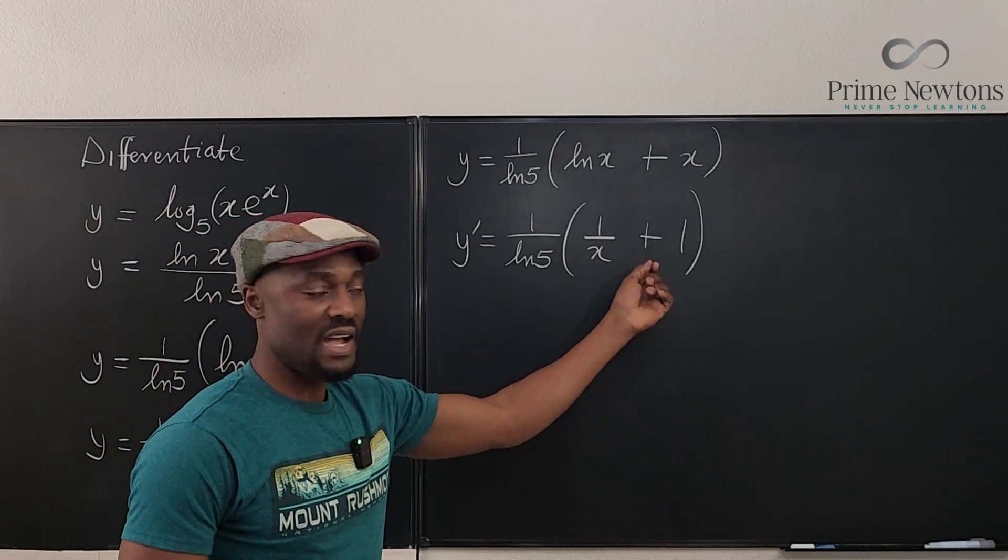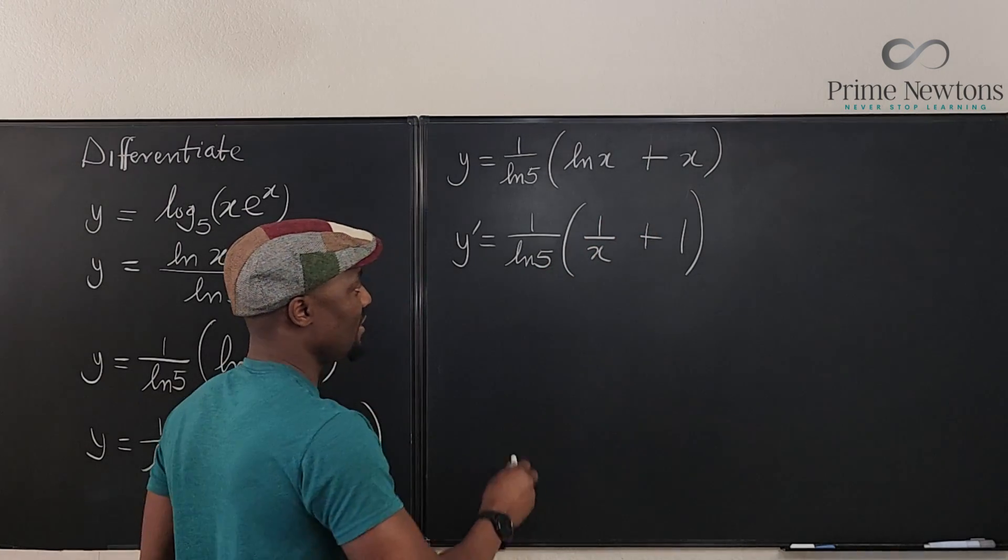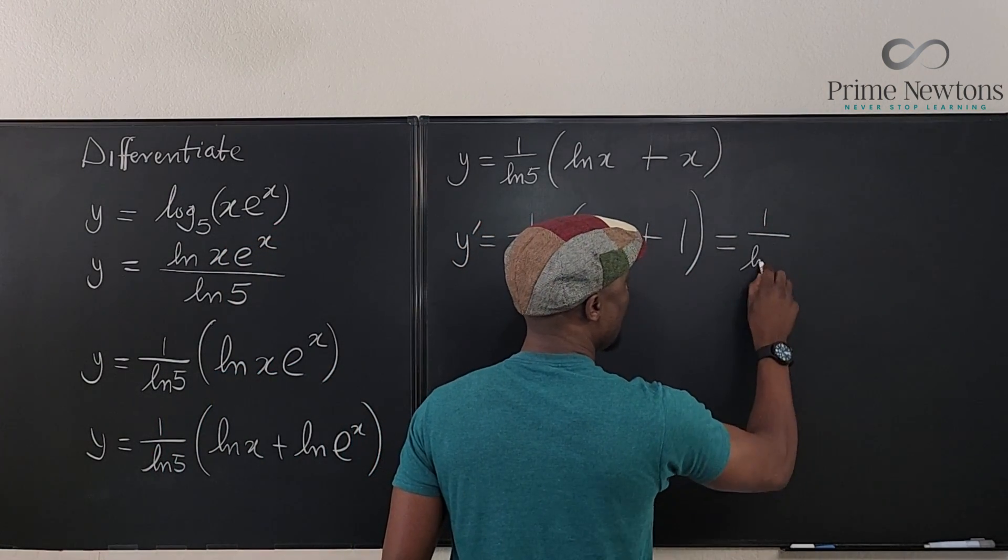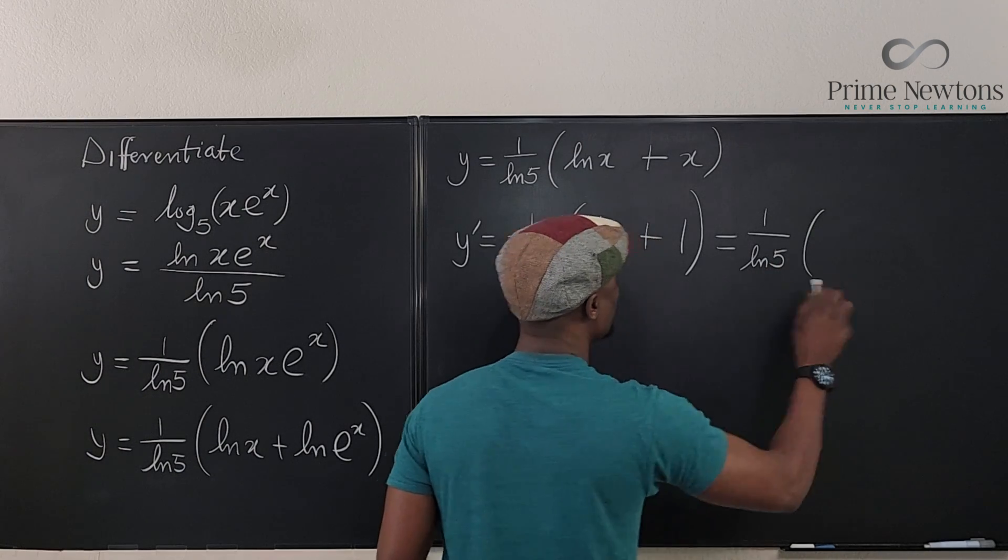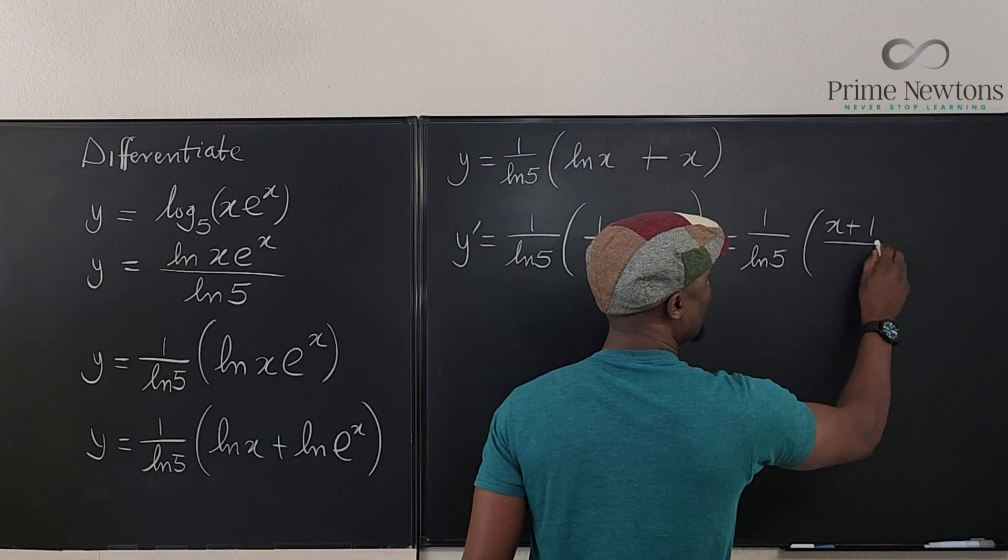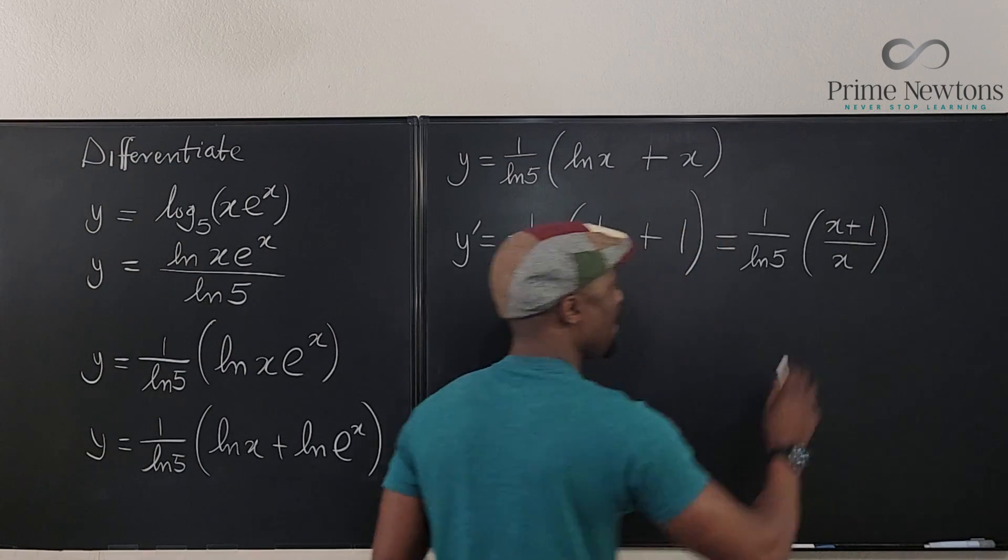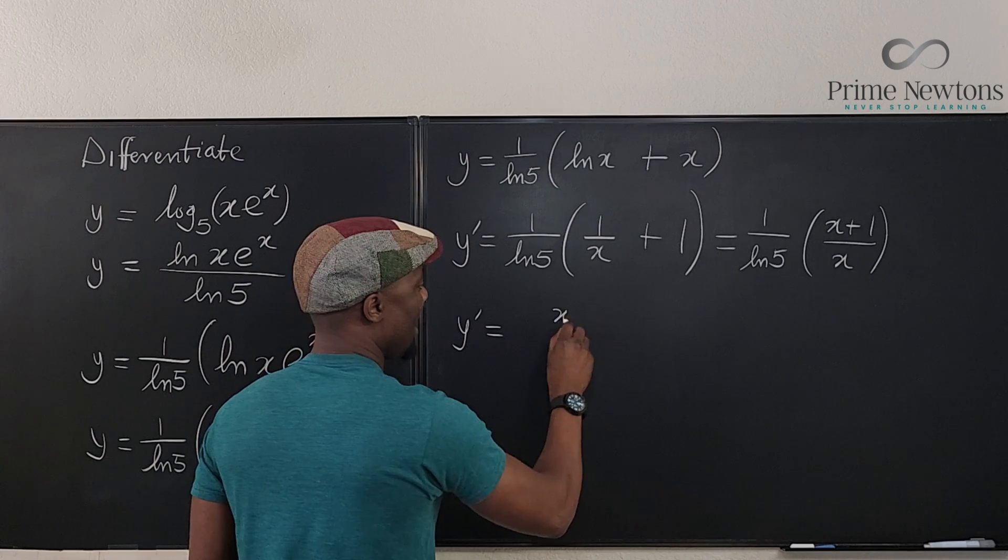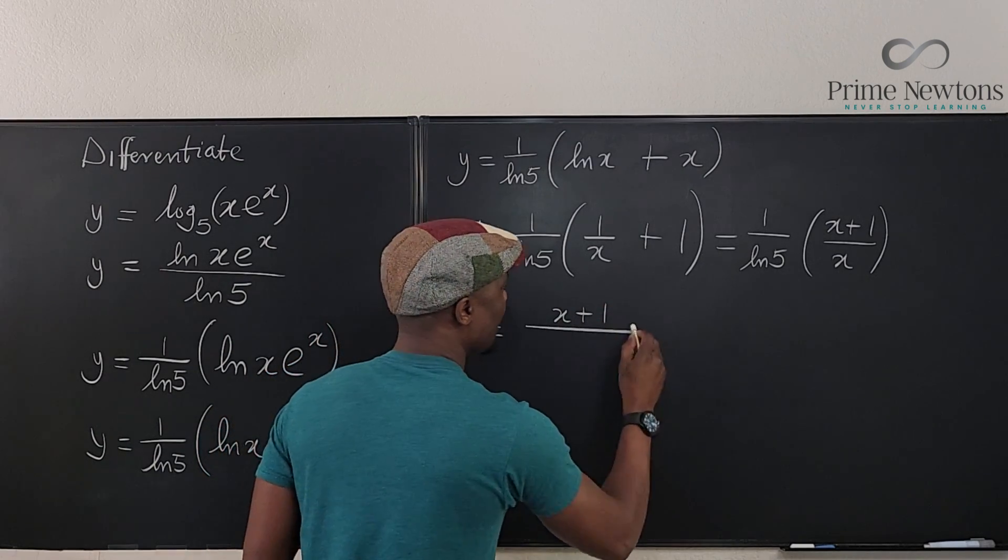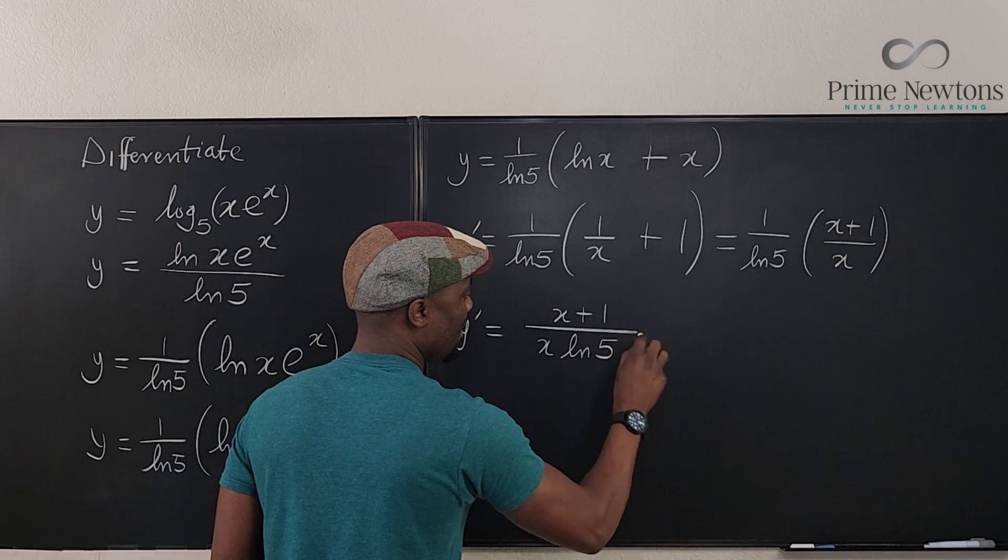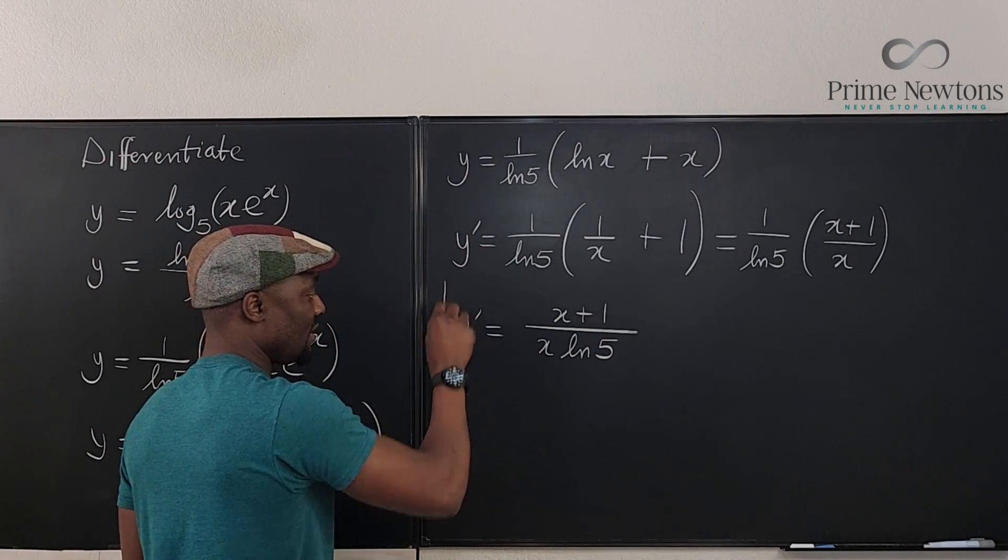And you can leave your answer like that. Or you can simplify. If you put these two together, see what you're going to get. This is the same thing as one over natural log of five times, this together is going to give you x plus one over x. So which means that y prime can be written as x plus one divided by x times the natural log of five. You can leave your answer this way.